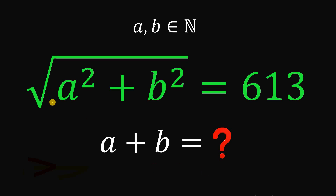Given this equation: the square root of a squared plus b squared equals 613, wherein a and b are both natural numbers, our goal in this question is to find the numerical value of a plus b.